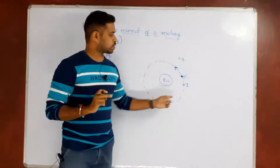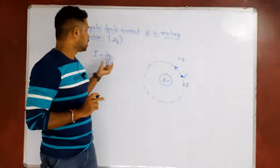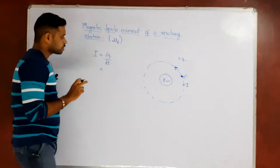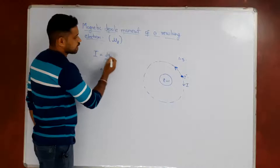I is equals to dq by dt. As I have said, rotation of the electron produces a current and due to that current there will be a magnetic dipole moment. So what is the definition for current? It is the rate of flow of charge. d by dt is actually called as rate. So rate of flow of charge is called as current.